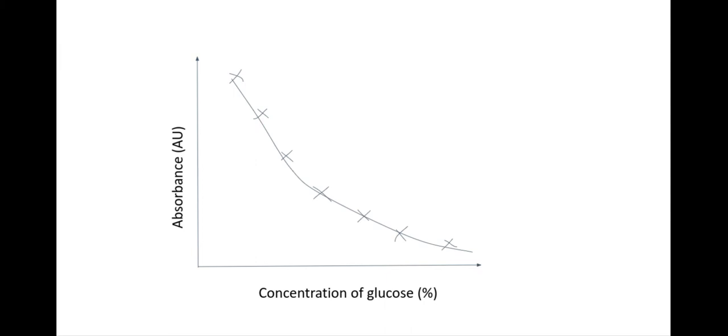If I do not remove my precipitate in the filtration process, my absorbance would be quite high for the higher glucose concentrations. But because I have actually filtered it out, it means I'm going to get a nice calibration curve, and as I get a high percentage of glucose, I get a low absorbance.